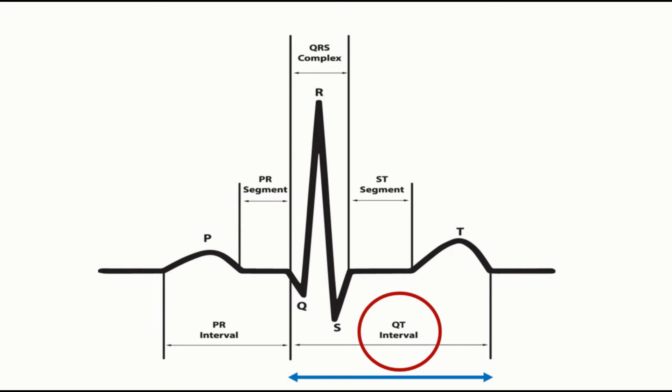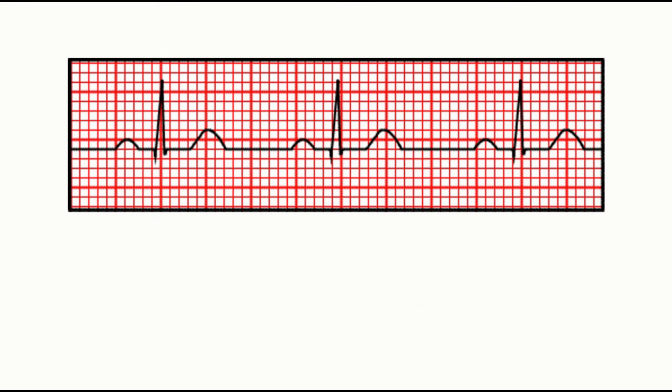Now for calculation of corrected QT interval we need two measurements. First is QT interval itself and another is RR interval. We shall learn with the help of an example. On this ECG we mark the beginning of QRS complex and the end of T wave. This will give us the QT interval.